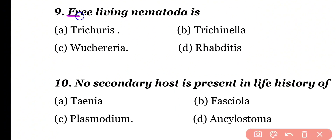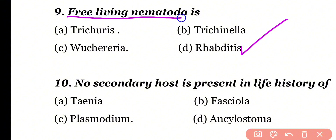Question 9: Which of the following is a free-living nematode — Trichuris, Trichinella, Wuchereria, or Rhabditis? Correct answer is option D. Rhabditis is a genus of free-living nematodes.